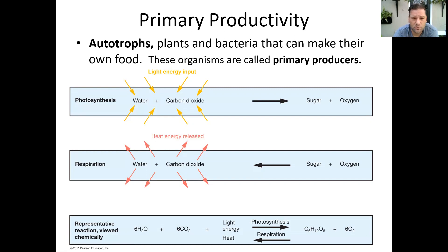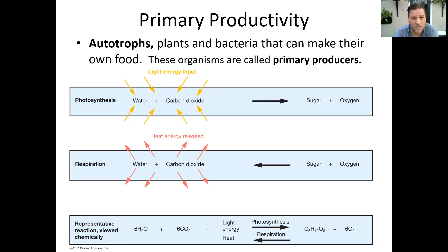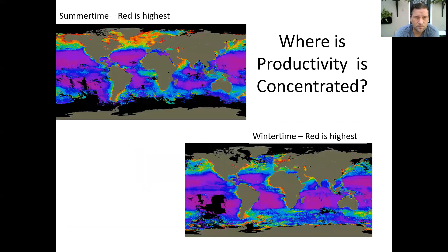Some of the other things needed — if you look on the very bottom — are light energy and different pigments. Probably the most common is chlorophyll, which helps that process. But let's take a look at some examples in the ocean.